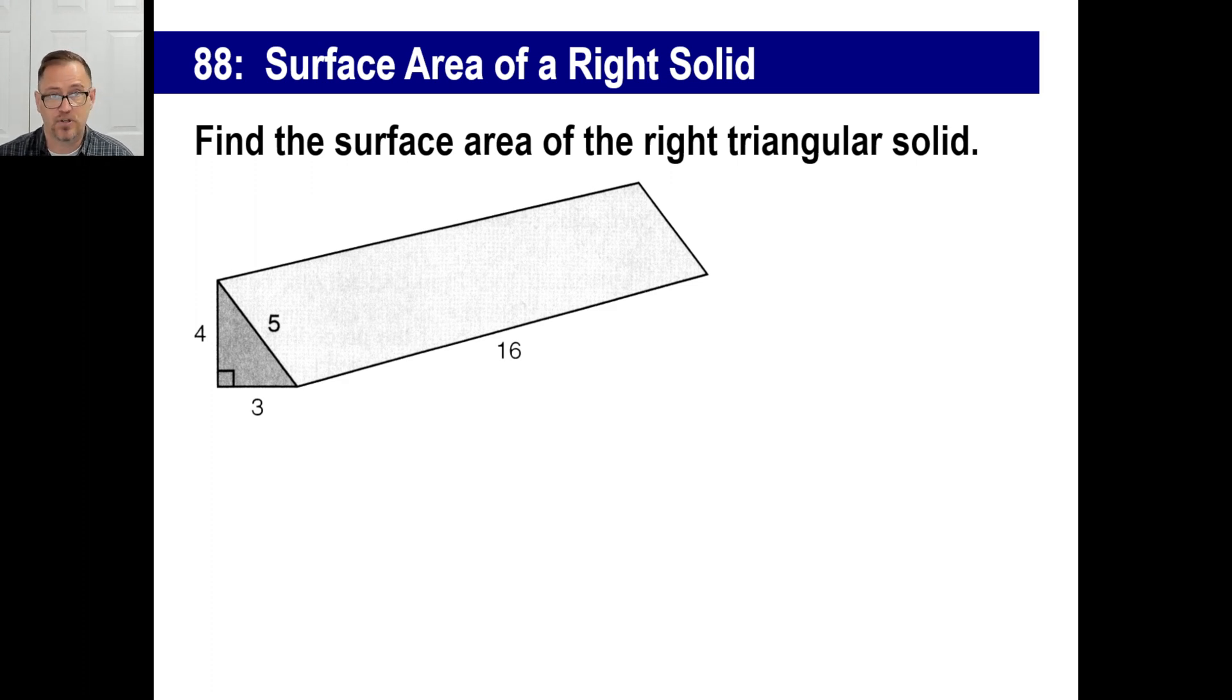They'll say, find the surface area of the right triangular solid. Well, you're going to need to find all of the sides of this monstrosity. Let's say it's just like a big hunk of gluten-free cheese that all homeschoolers eat. By the way, it's pretty tall here because it's four feet by three feet, but it's a big chunk. Costco. Well, let's find the surface area.